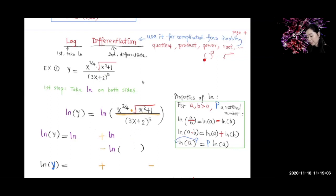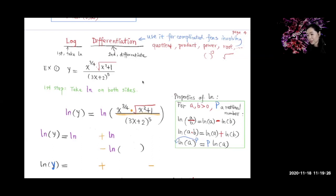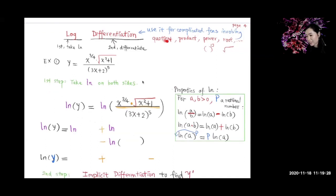This function over here is kind of complicated — it is a quotient and it has powers and roots. So if you just differentiate it directly, you have to use the quotient rule together with the product rule and the chain rule. For a complicated function like this one, we prefer to use logarithmic differentiation.